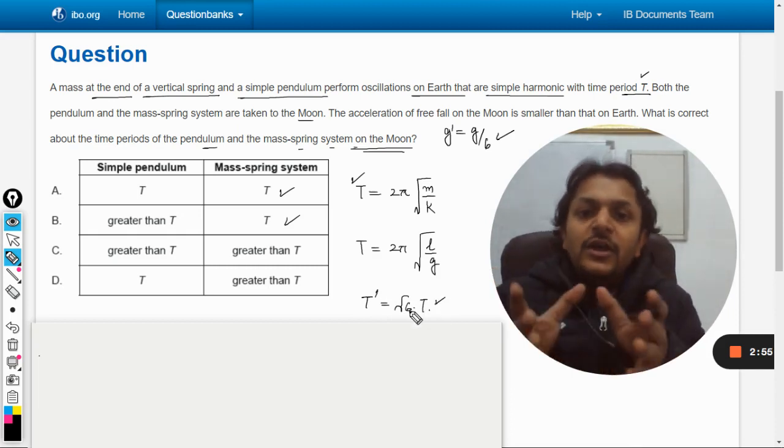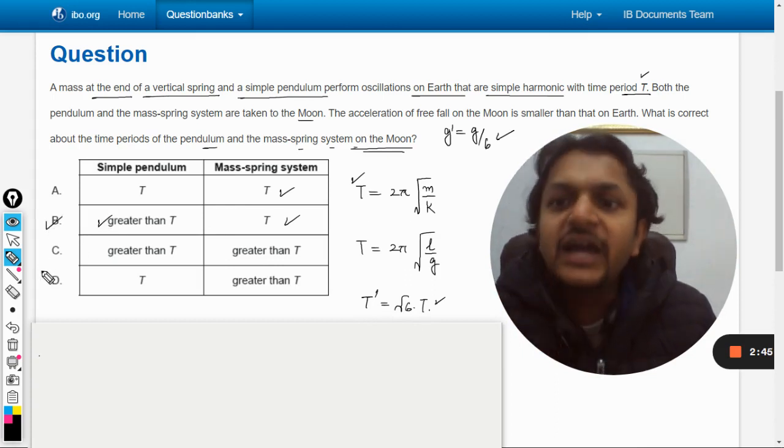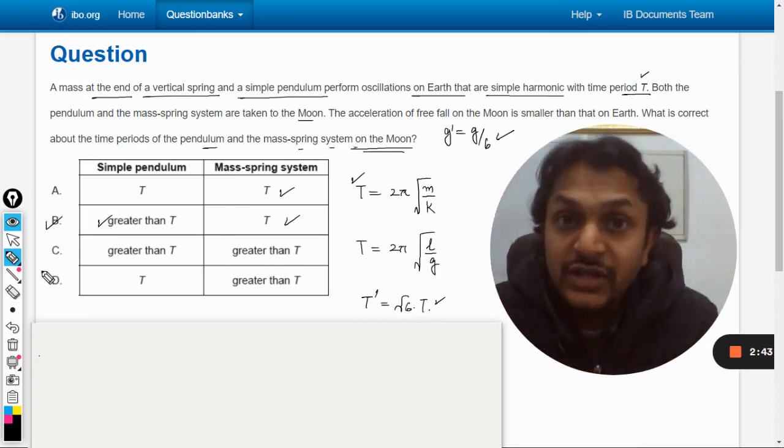So it will be root six times the time on Earth. Definitely this time is going to increase, so it will be greater than T, and B will be the correct answer. This is the right explanation for this question, my dear students.